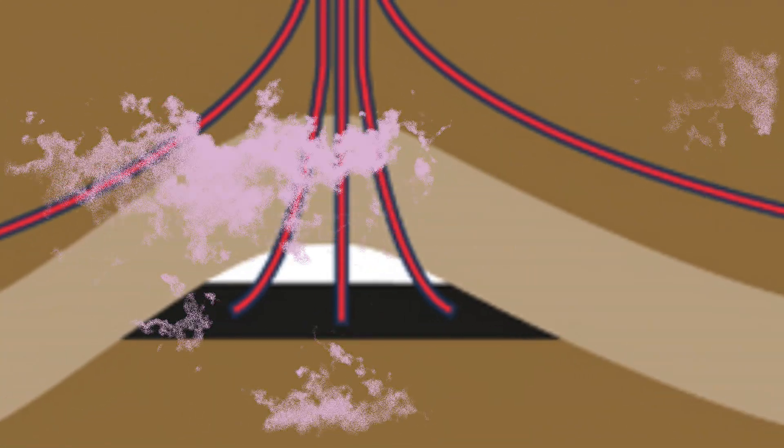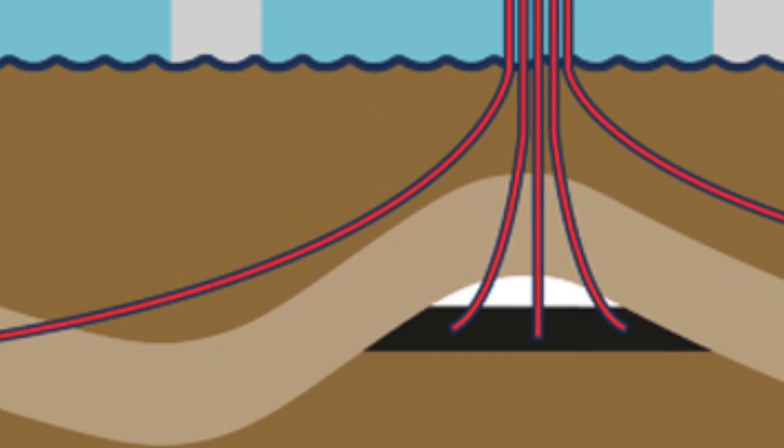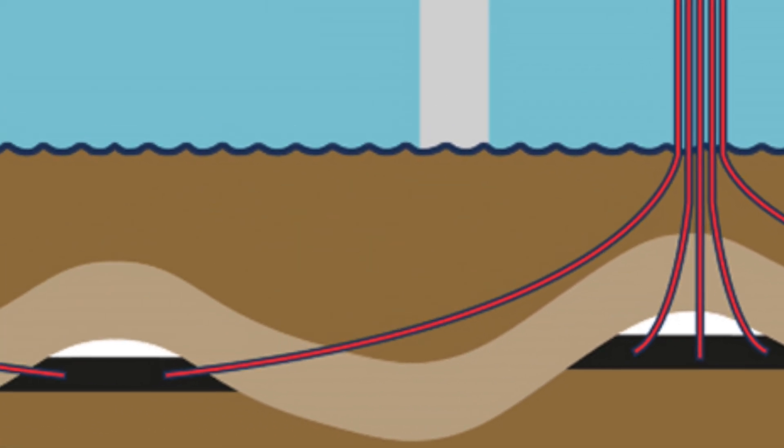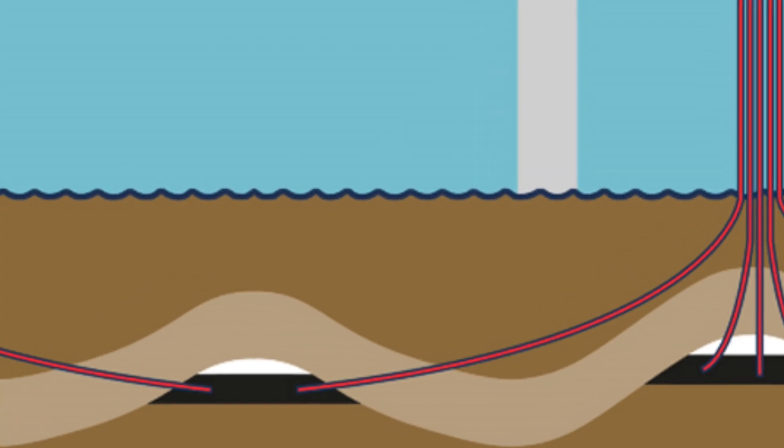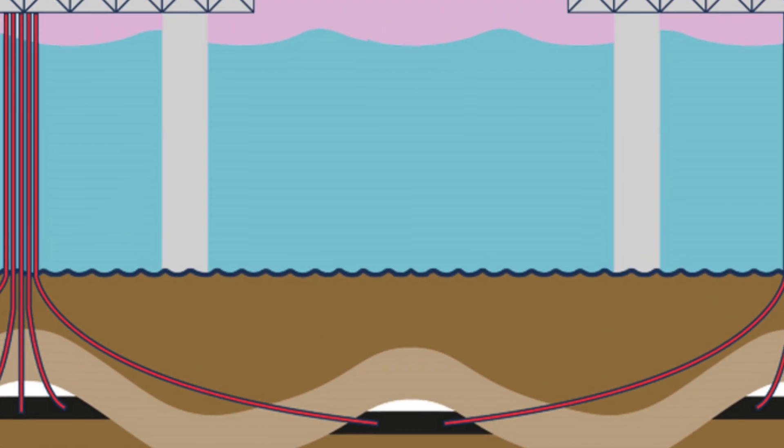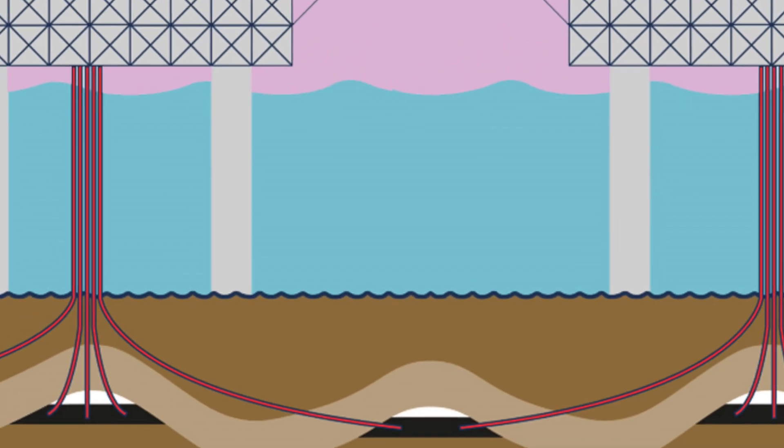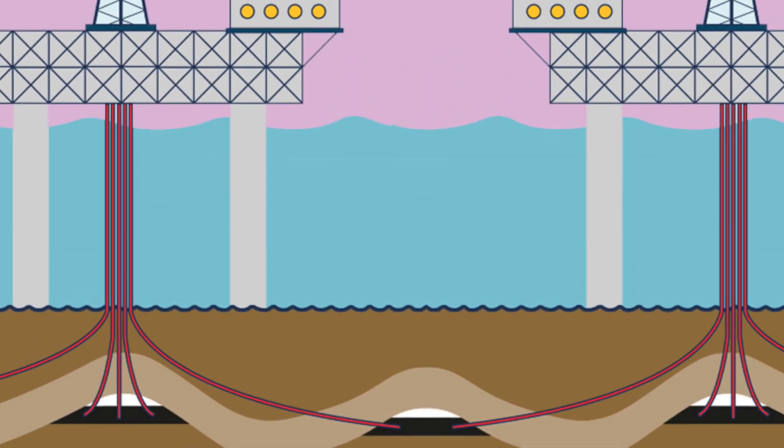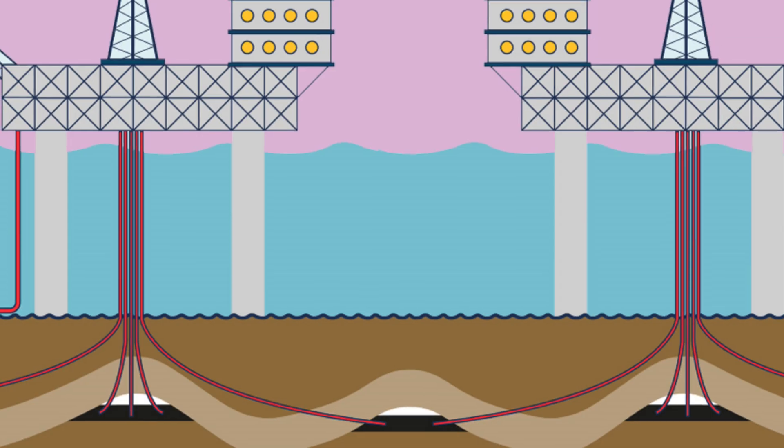So why use directional drilling? One key benefit is increased access to oil and gas reservoirs that were previously unreachable with traditional methods. It also reduces the number of drilling sites needed, which means less surface disturbance and a smaller environmental footprint.